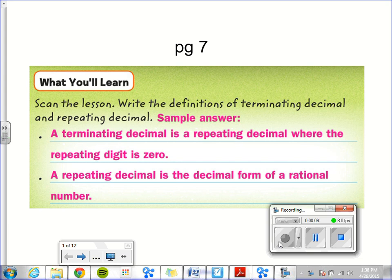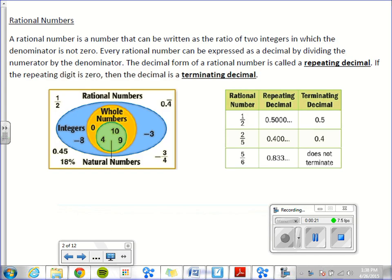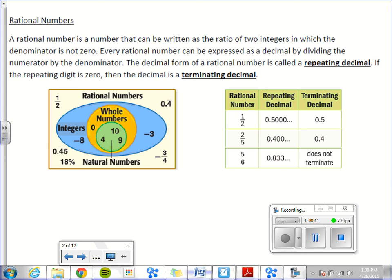A terminating decimal is a repeating decimal where the repeating digit is zero. A repeating decimal is the decimal form of a rational number. A rational number is a number that can be written as the ratio of two integers in which the denominator is not zero. Every rational number can be expressed as a decimal by dividing the numerator by the denominator. The decimal form of a rational number is called a repeating decimal. If the repeating digit is zero, then the decimal is considered terminating decimal.